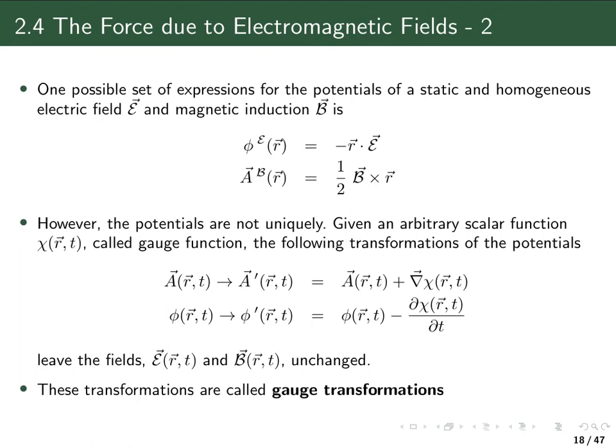If this is a well-behaved function, a scalar function, an arbitrary scalar function which we actually call the gauge function, then the potentials, the vector potential and the scalar potential, will change but the fields will not be changed.